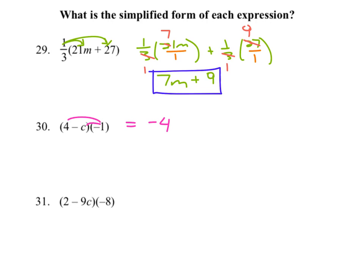Well, anything times negative one changes it to its opposite. So four times negative one, negative four. Negative C times negative one, positive C. It changes to its opposite sign. Done.